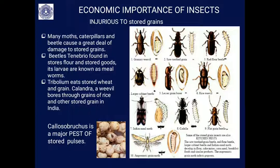Stored grains are also damaged — rice weevils, moths, caterpillars, and beetles cause great damage to stored grains. The beetle Tenebrio is found in stored flour and stored goods; its larvae are called mealworms. There is a long list of pests injurious to stored grains.